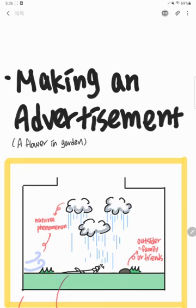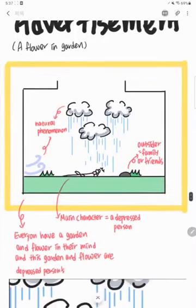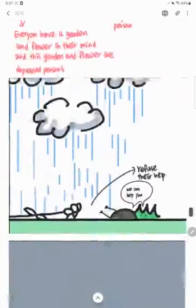The name of the advertisement is 'The Flower in the Garden.' It's made in the form of a time-lapse, and the pictures shown are part of the video. The advertisement was made on the assumption that it would look like this if there was a garden in a depressed person's body. This colorless flower refers to a person with depression as the main character, and the stones and grass around it refer to people — family members and friends.